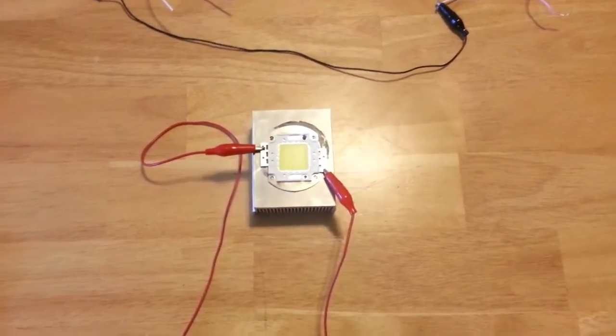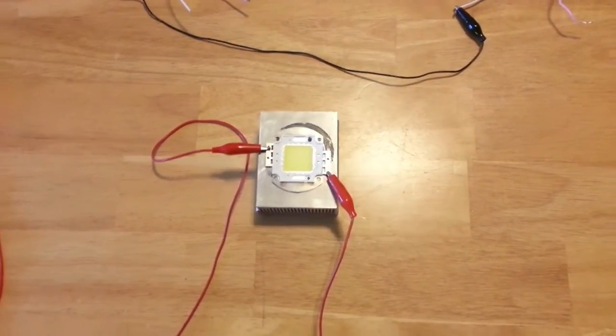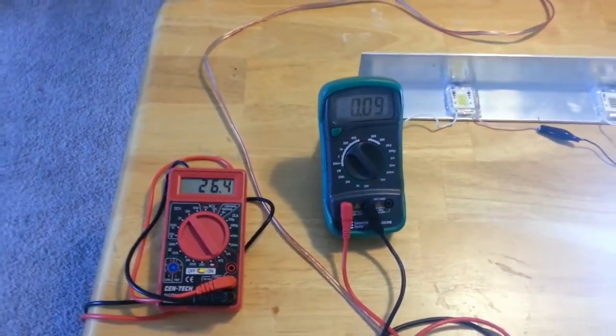I have here a 100 watt, 6500K LED, white. 26 volts by itself, 100 milliamps, is lit.